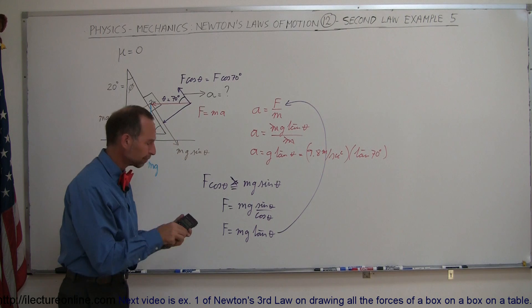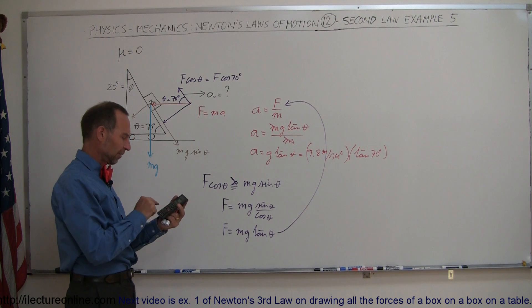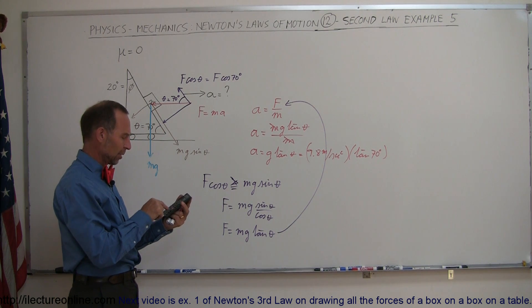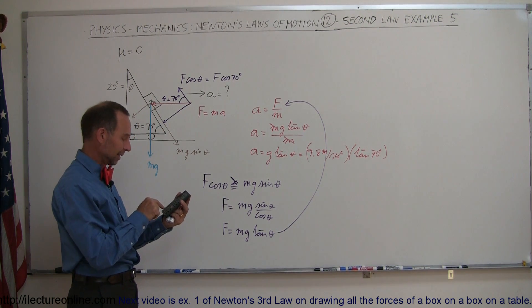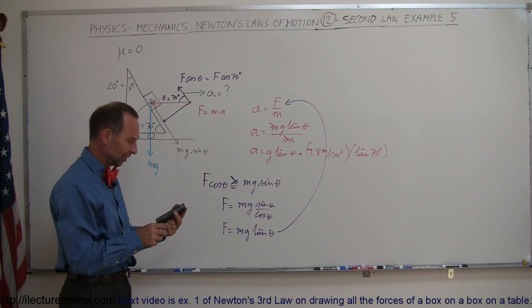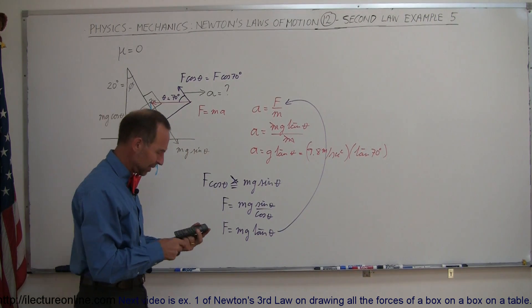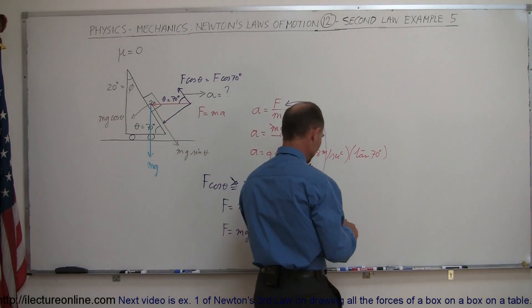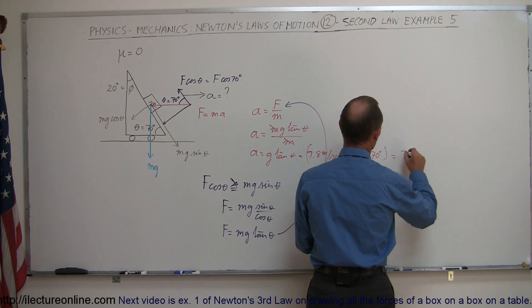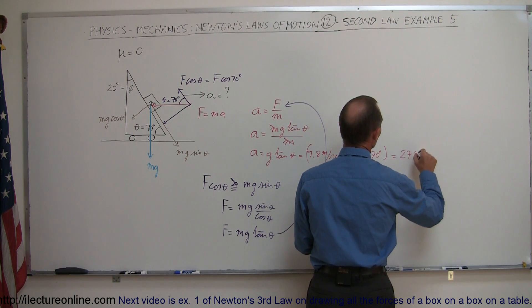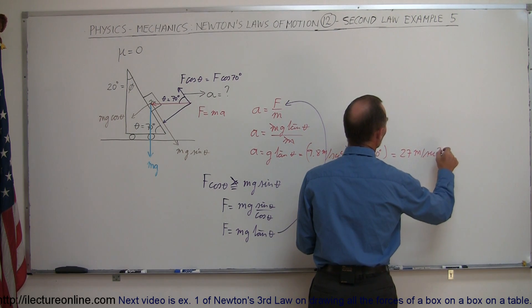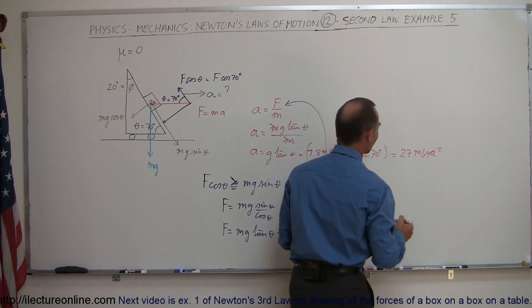Taking the tangent of 70 degrees and multiplying by 9.8 gives a large acceleration. The acceleration required is 27 meters per second squared.